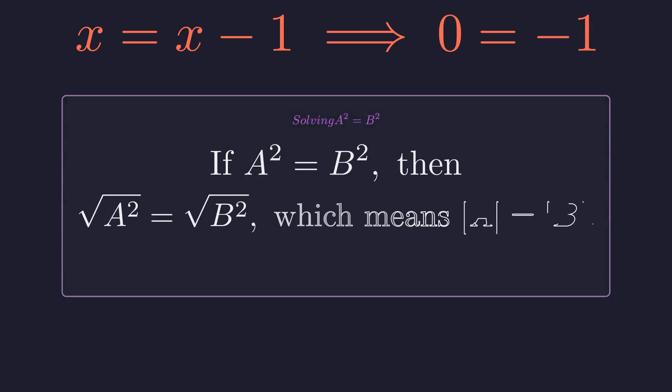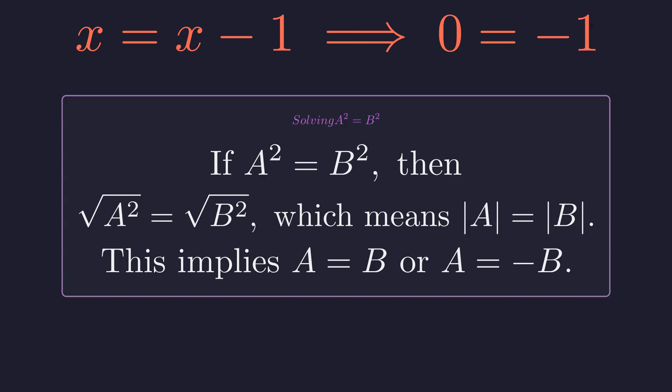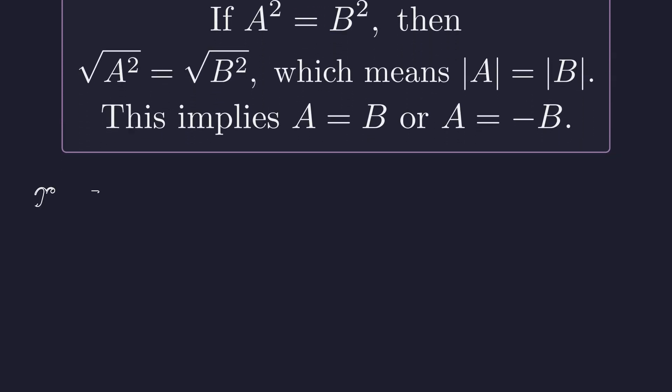But here's what we missed. When you take square roots, you need to account for both the positive and negative cases. If a squared equals b squared, then a could equal b, or a could equal negative b. So we actually have two cases to consider.